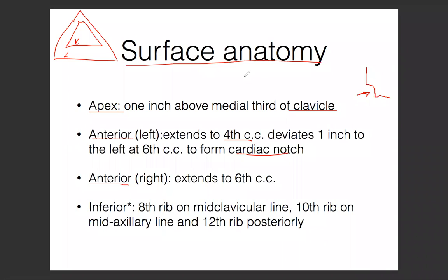For the surface anatomy of the pleura, the important one is the inferior. When it comes to the apex, it's one inch above the clavicle. Anteriorly, what you really need to know is that it stops at the sixth costal cartilage, but importantly on the left, at the fourth costal cartilage it goes one inch to the left to form the cardiac notch - so it doesn't go straight to the sixth. While on the right, it just goes straight to the sixth.